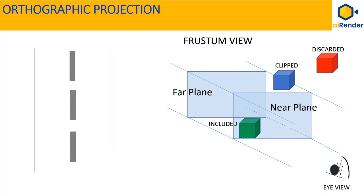As you can see, the objects which fall completely within the viewing box, like the green cube, are completely visible and included in the view. The red cube, which falls outside the view box, is discarded and the blue cube, which falls on the boundary of the viewing box, is clipped.